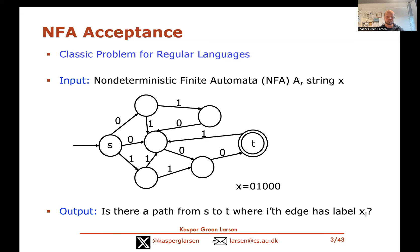This is really a path from s to t where the labels on the edges that you follow match the characters in x. These automata are non-deterministic, which means that at any given node there can be multiple edges labeled with the same character, so we're asking whether there's some path that leads from s to t in this NFA.